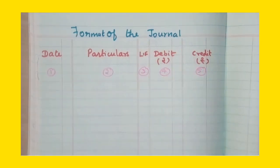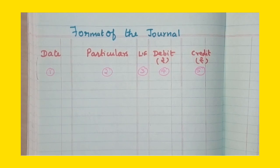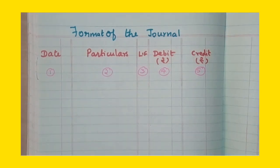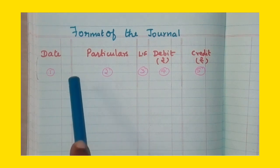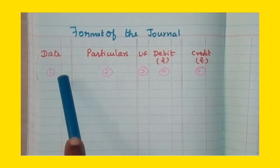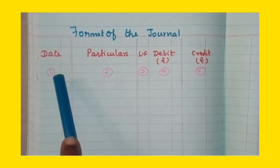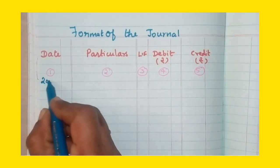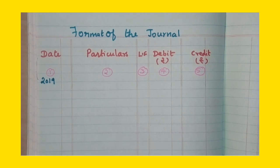To journalize the following transactions, we look at the journal format. The first column is the date — it will be recorded in chronological order. This is the date of the transaction, with the month and the year. We need not repeat the year against every entry since the year is almost the same. For example, 2019 — then the month and the subsequent date.